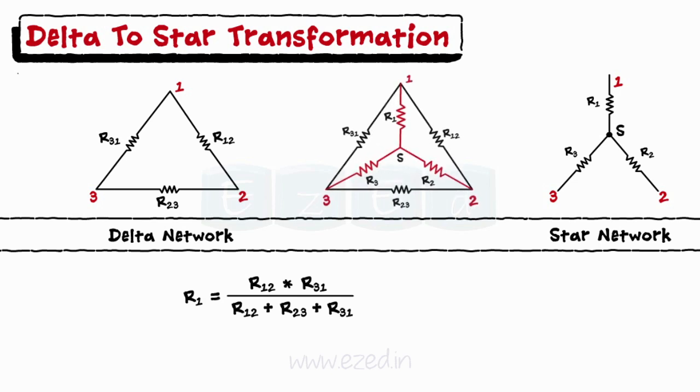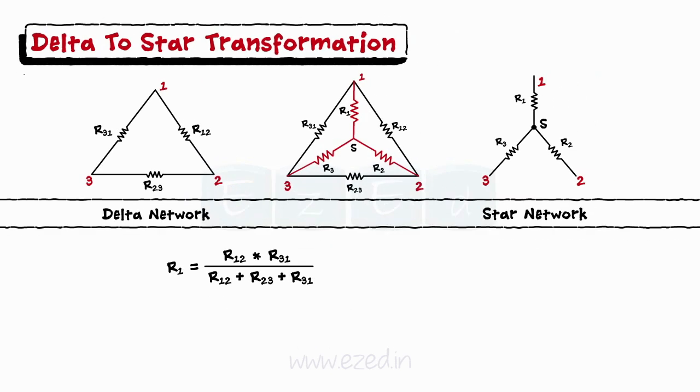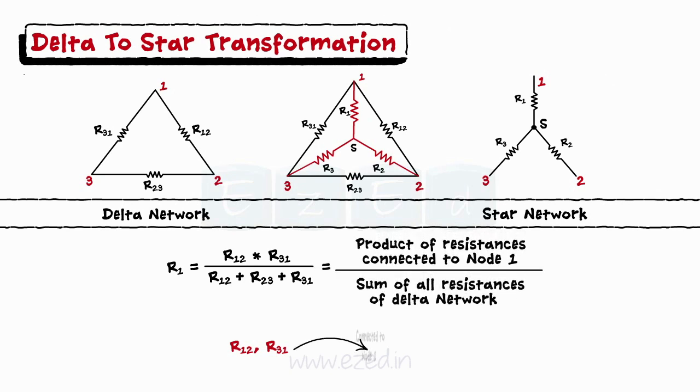Let's see how to remember this formula. We want to find the R1 of star from delta network. Thus, always take the product of all those resistors which are connected to terminal 1 of delta upon the sum of all resistances of delta.